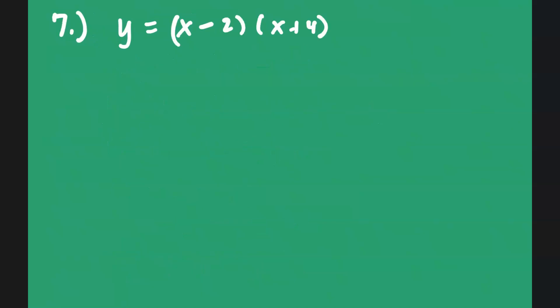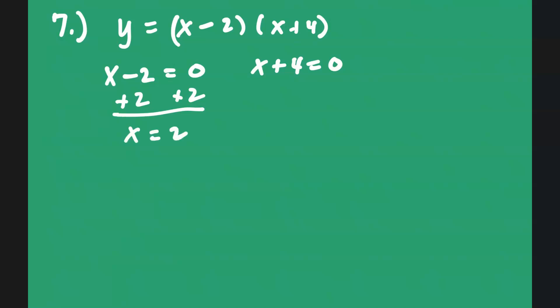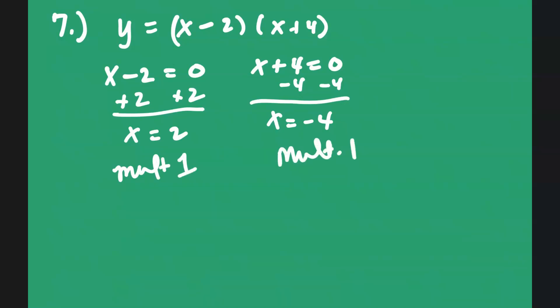To find the zeros, all you have to do is set each factor equal to 0 and then solve for x. In this case, you add 2 to both sides, so you get x equals 2. And for the other, you subtract 4 from both sides, so you get x equals negative 4. These are each a multiplicity of 1.